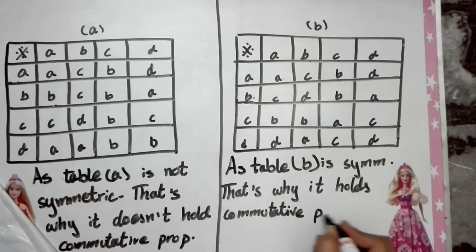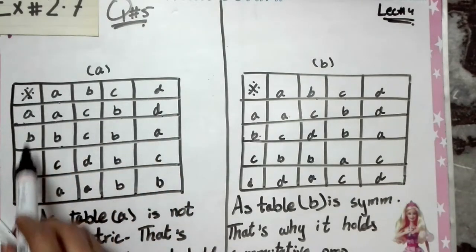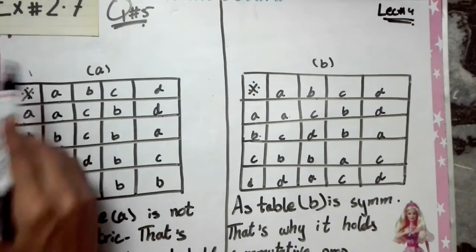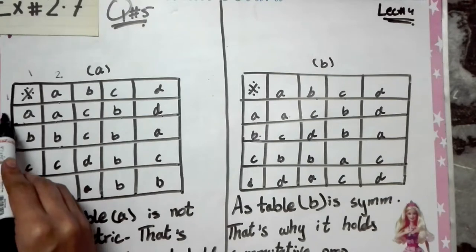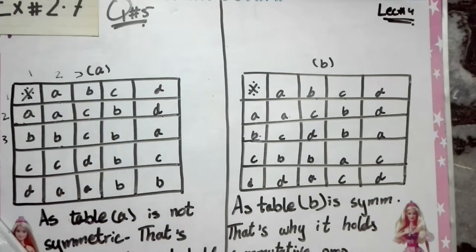To summarize the method: you have to see whether the rows and column values match. If the first row and first column have the same values, the second row and second column have the same values, and the third row and third column have the same values, then the operation holds the commutative property. If they do not match, it does not hold the commutative property.